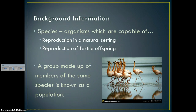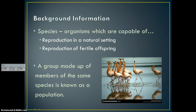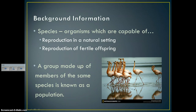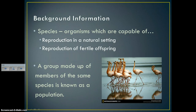A species consists of organisms capable of two things: reproduction in their natural environment, and their offspring are fertile — meaning their offspring have to be able to produce more offspring. Those two things make up a species. A group made up of members of the same species is also known as a population, so I'll use those two terms interchangeably.